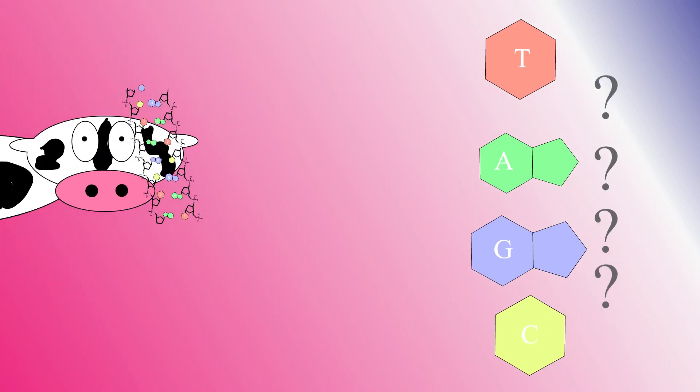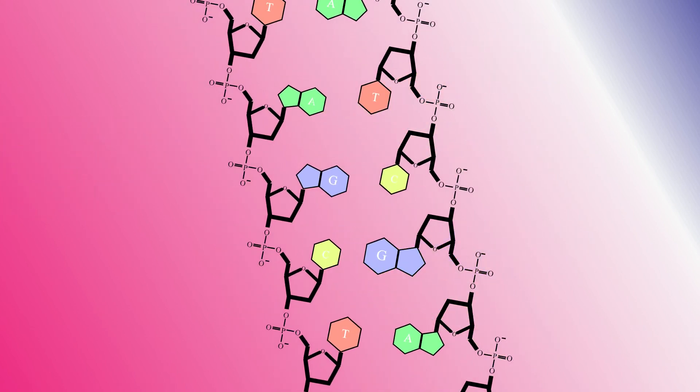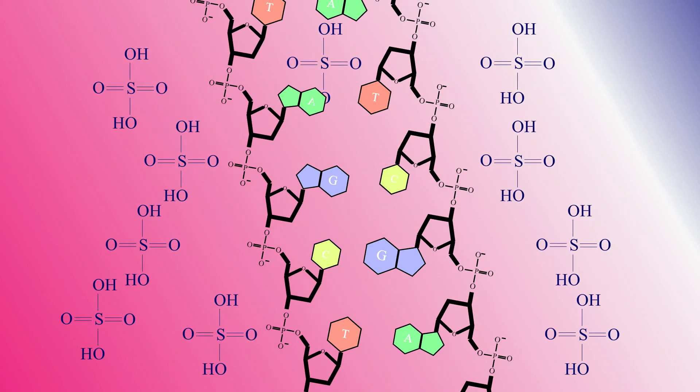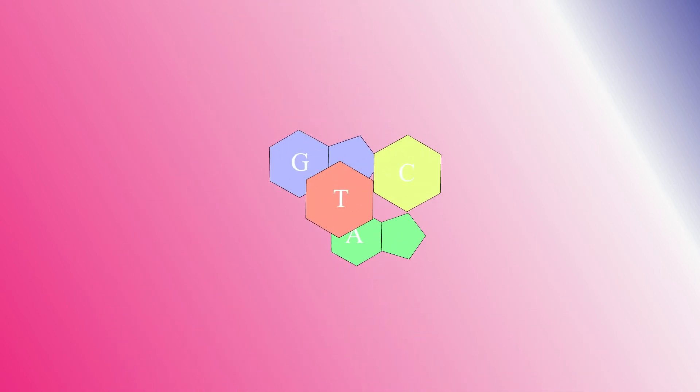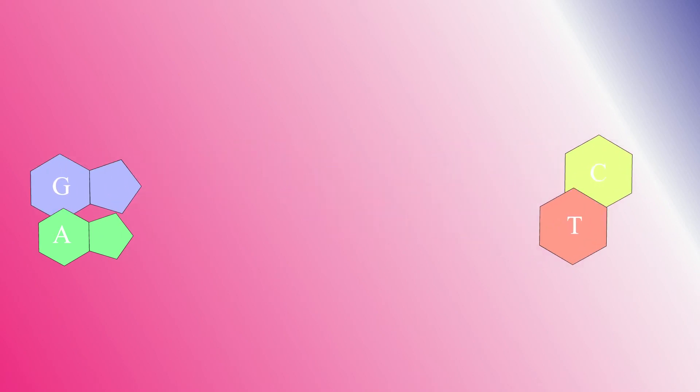They started by extracting DNA from cows and breaking it apart using sulfuric acid. This cuts the bases from their sugar phosphate backbone. By turning them first into crystals, the bigger A and G could be separated from the smaller C and T.